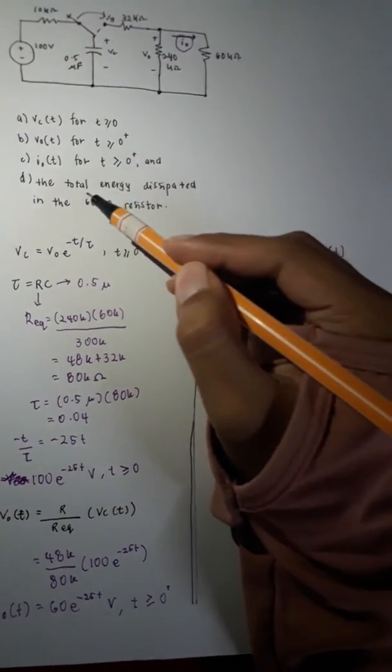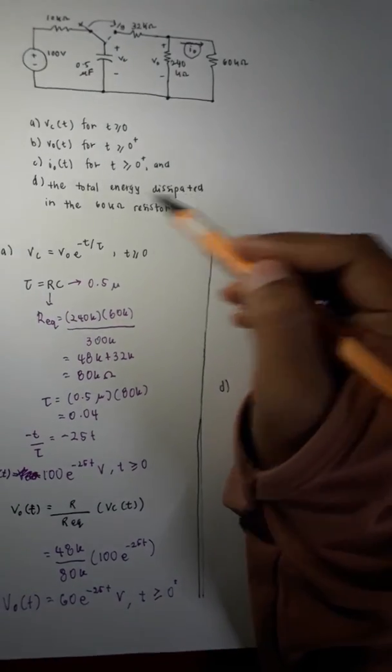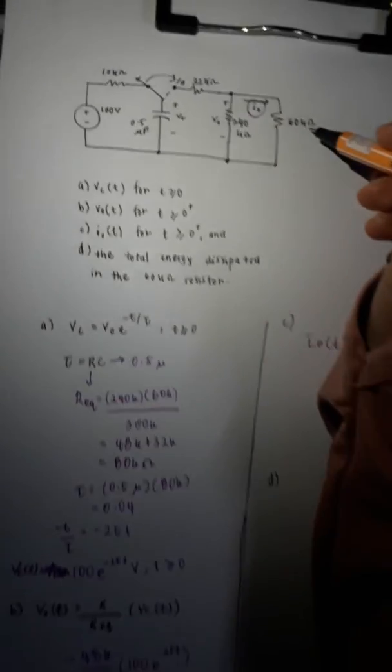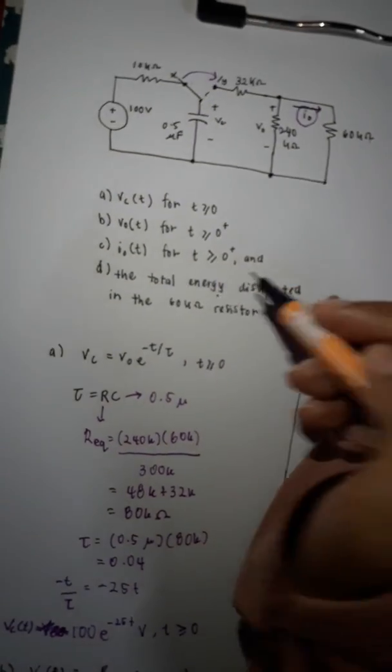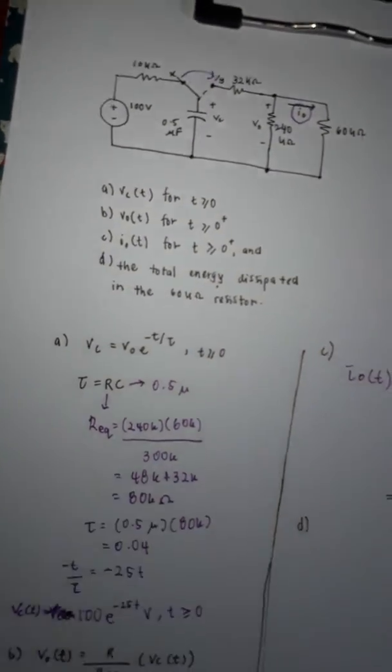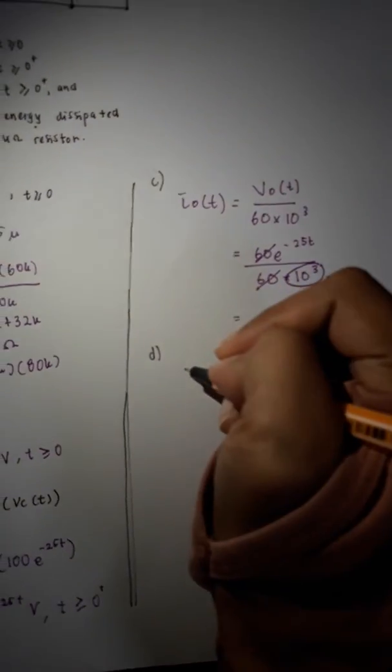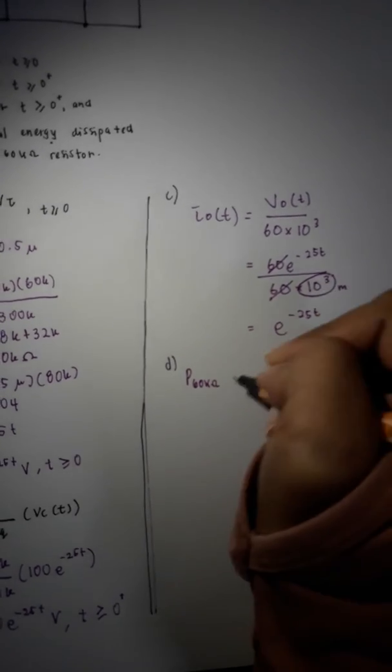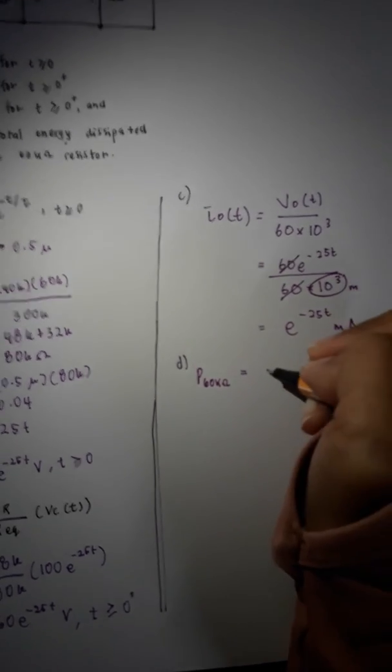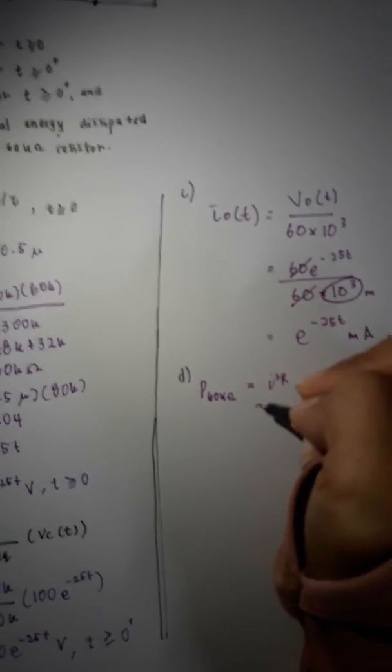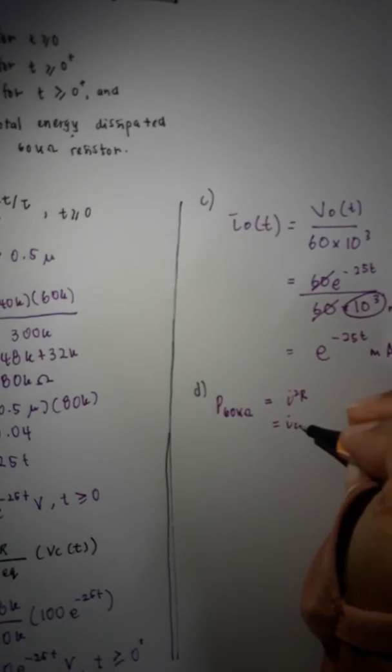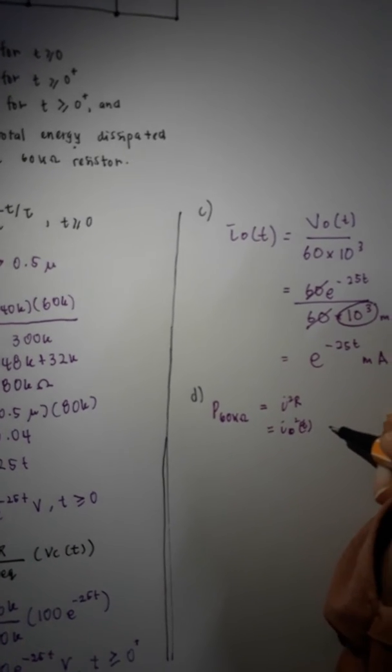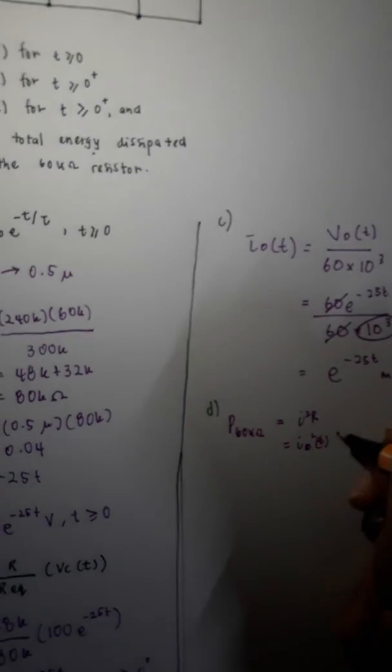The next question D. The question wants the total energy distributed in the 60K of resistor. So, in here. But, to get the energy, we have to find the power first. So, the equation for power for 60 kilo ohm is equals to i squared R. But then, i squared not squared R. The R is 60 kilo ohm.